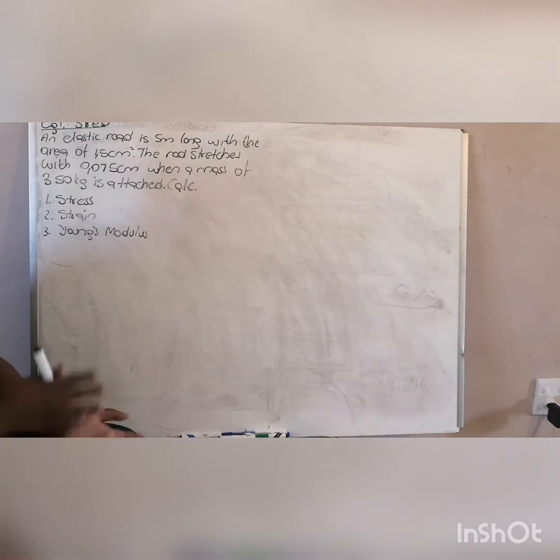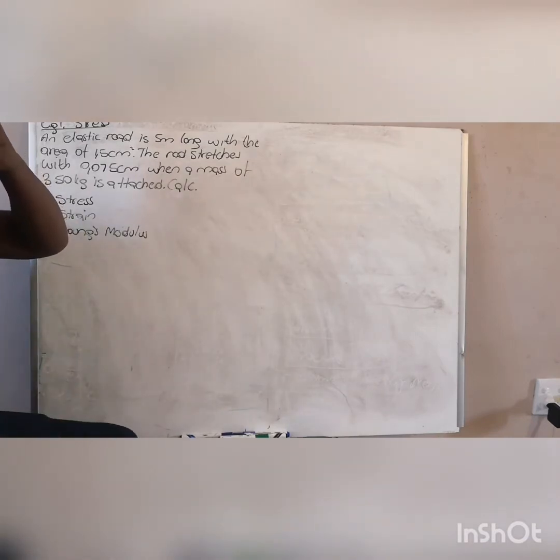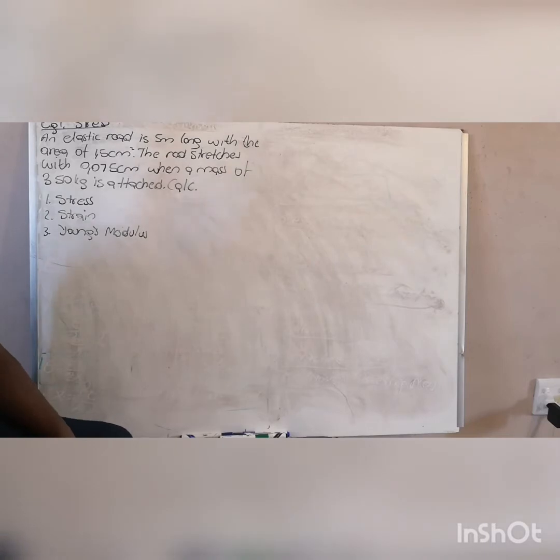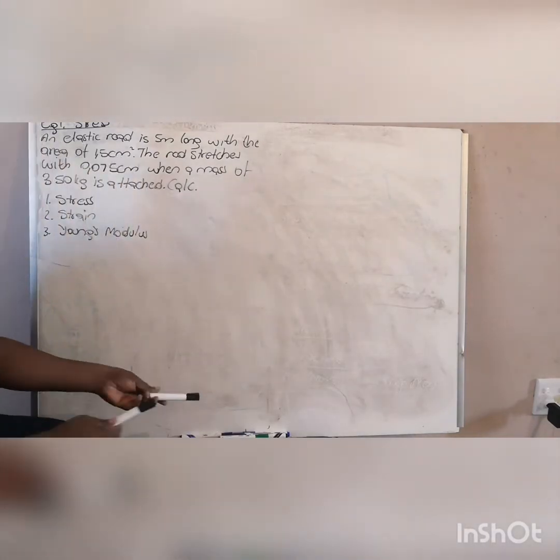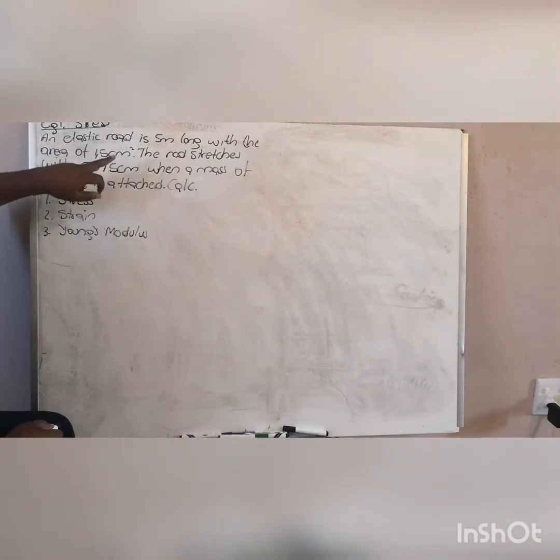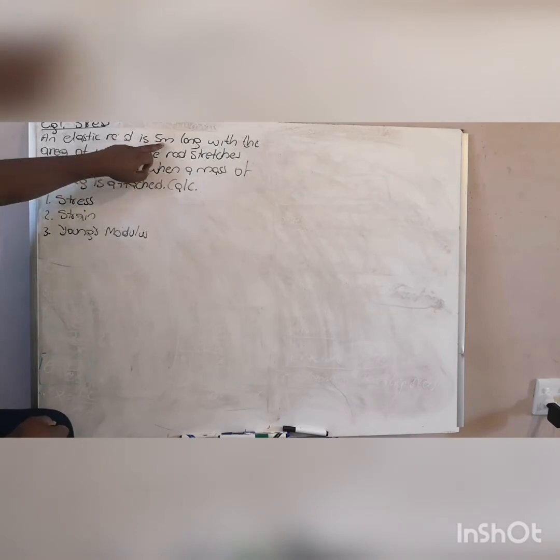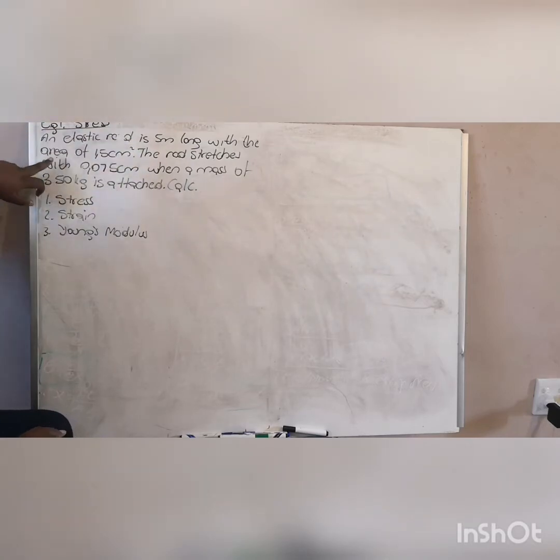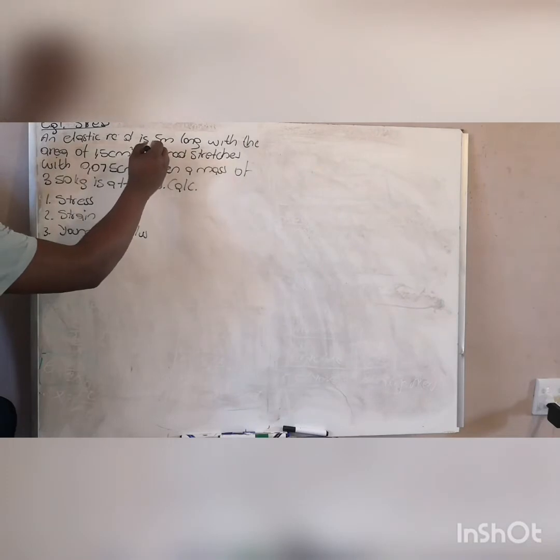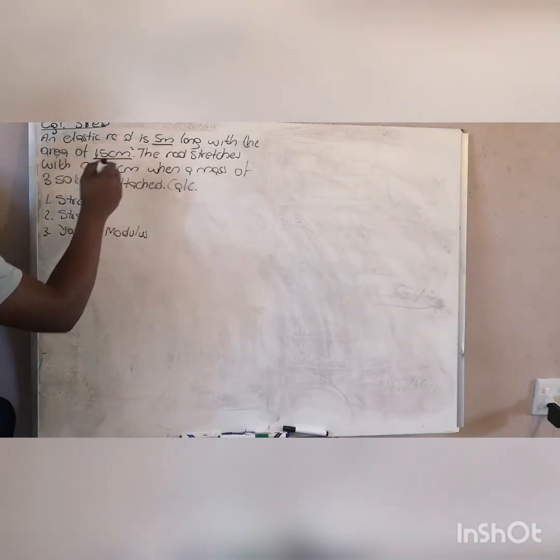So now I'll do an example on stress and strain and then Young modulus. This is taken from a past paper, remember, and it says an elastic rod is five meters long with the area of 1.5 centimeters squared. So this is an original length, area is 1.5, and then it stretches - this is a changing length. This is the mass. Now let's write our data.